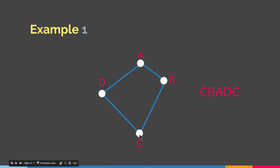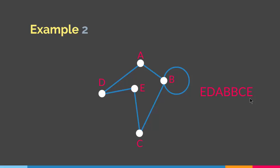Let's say we have another graph. We will have a path that goes from E to D to A to B, comes back to B, goes to C, and then ends at E. We started at E and ended at E, visiting every edge, so this is an Euler circuit. An Euler circuit is an Euler path that starts and ends at the same vertex. When a graph has an Euler circuit it is called Eulerian or Unicursal.